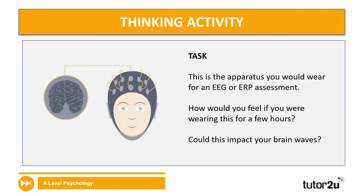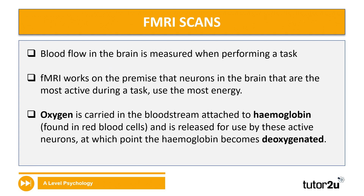Let's think about this a little more. On screen is the apparatus that you'd wear for an EEG or an ERP assessment — you may recognise this image from our earlier lesson. How would you feel if you were wearing this for a few hours? And also think: could this impact your brain waves anyway? Pause the video for 60 seconds while you ponder on these questions and jot your thoughts down. We'll come back to your answers a little later when we do some evaluation, so keep that to one side.